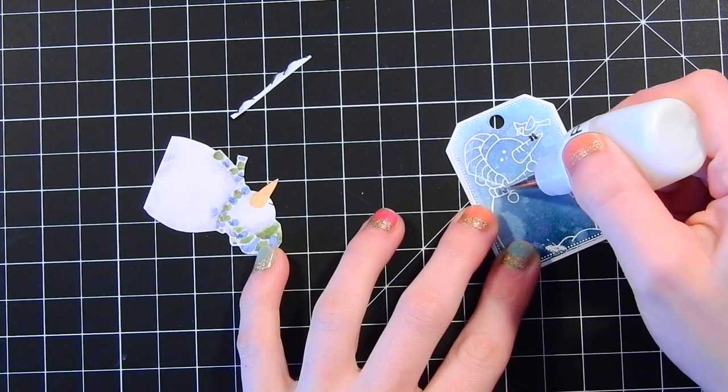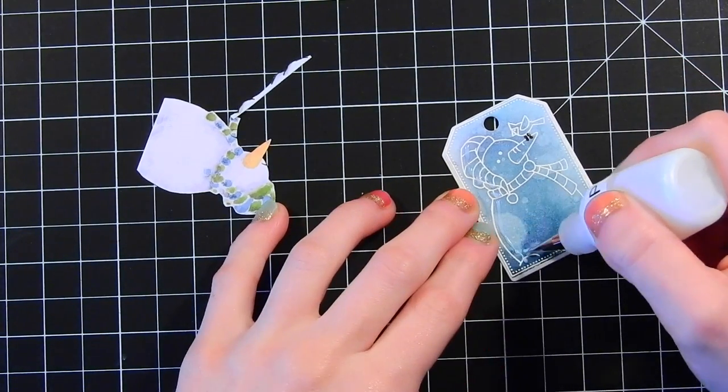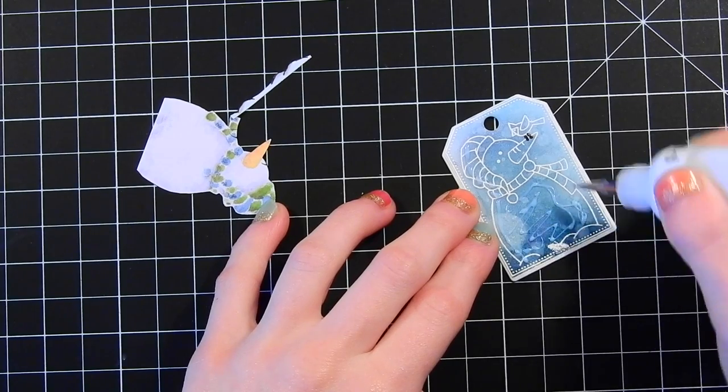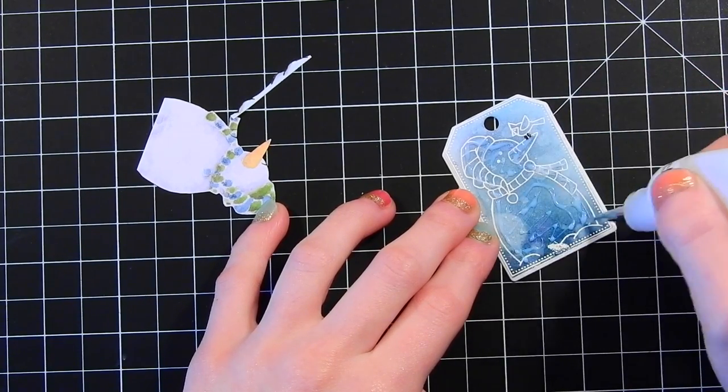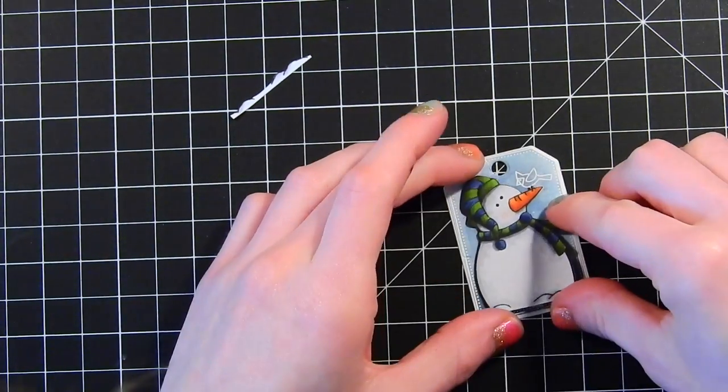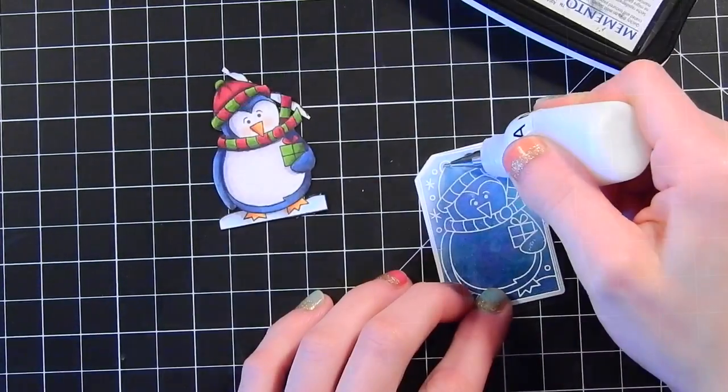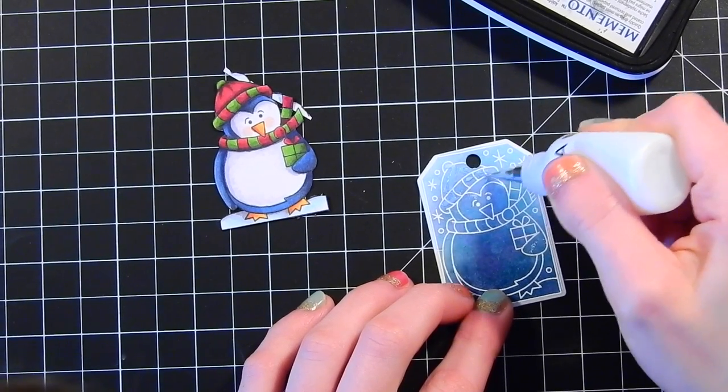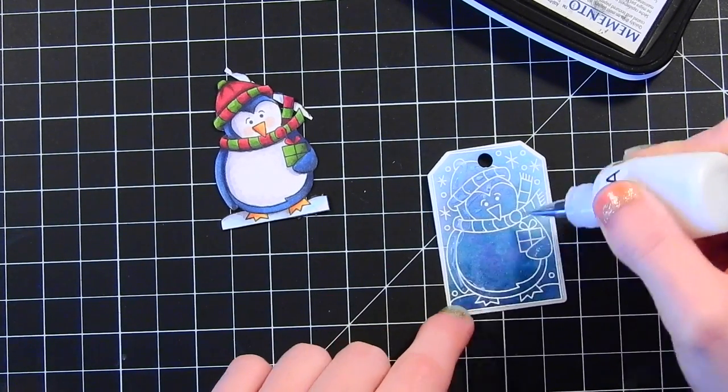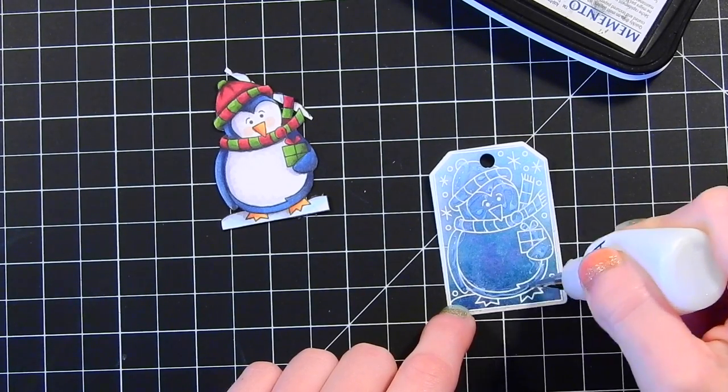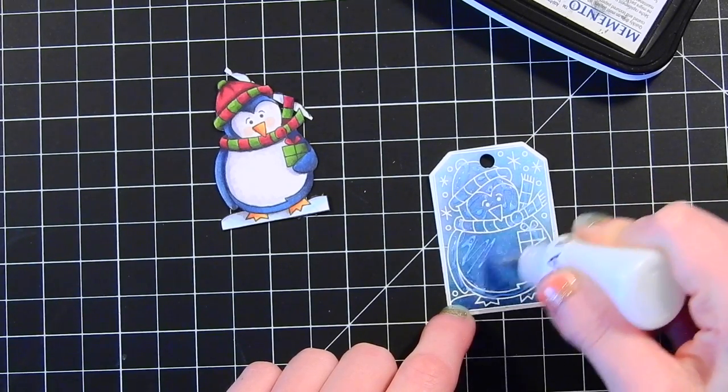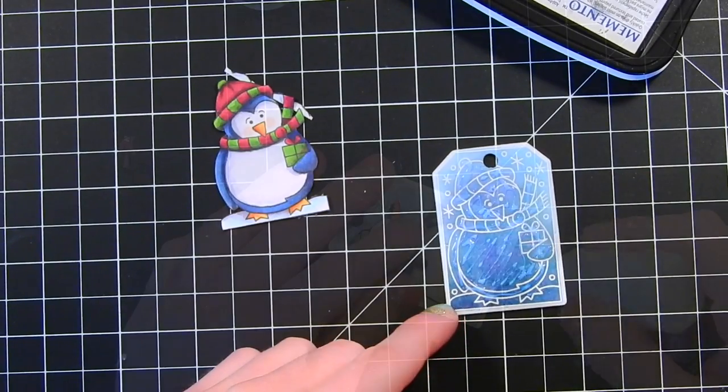So now I'm die cutting the tags and I'm taking my fussy cut images and I'm gluing them on top of my die cut tags. As you can see I'm just using some PPA matte glue, I put that into a fine tip bottle so it's nice and easy precision tip. Doing the same thing with the penguin, I'm going to apply glue onto him and then attach my penguin down.